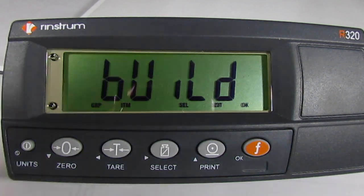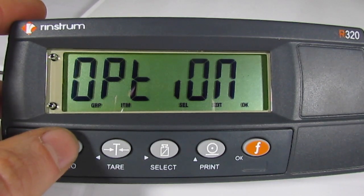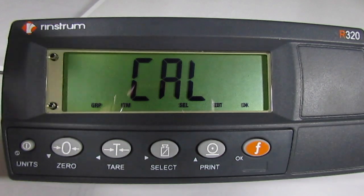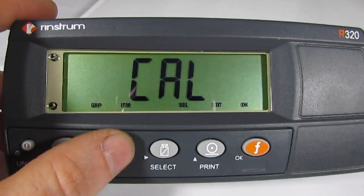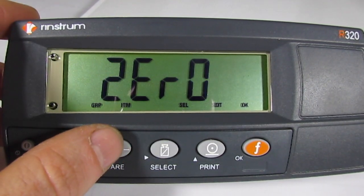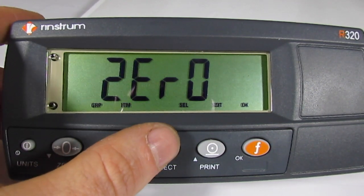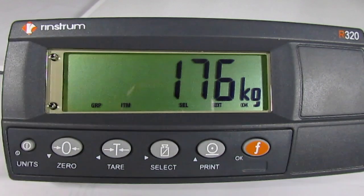At build, press the zero key two times to enter the CAL menu. Press the tear key to drill into the CAL menu, zero will be displayed, and then press the select key to drill into zero CAL.